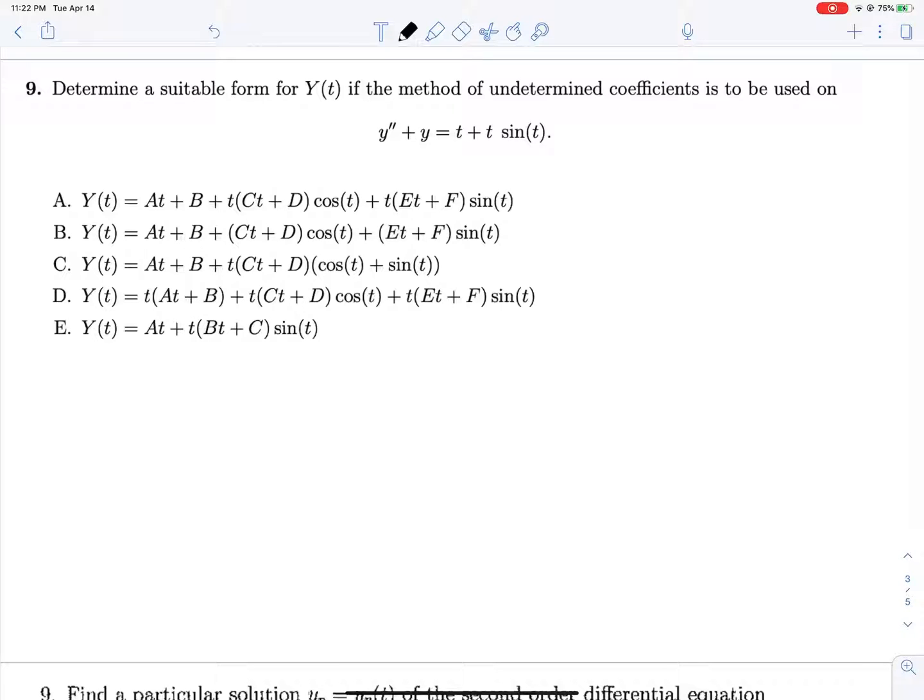Okay, let's determine a suitable form for y of t if the method of undetermined coefficients is used on this thing right here. So let's grab our characteristic equation and solve it. That's r squared plus 1 equals 0. That's r squared equals negative 1. r is equal to plus or minus i. So we know that yc will be of the form c1 cosine t plus c2 sine t. And as a result, instead of guessing At plus B plus Ct plus D sine t plus Et plus F cosine t...